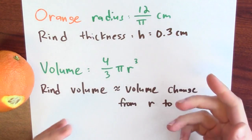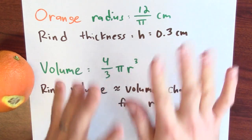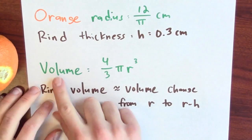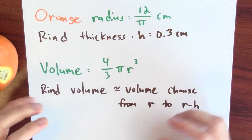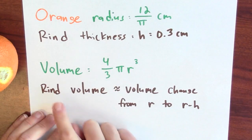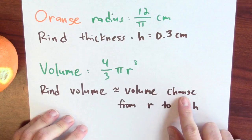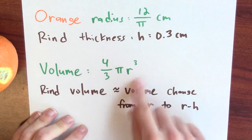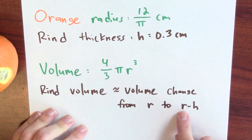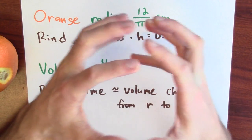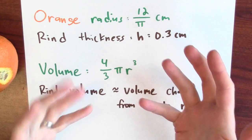Now, how does knowing the rind thickness help me calculate or at least approximate the volume of the rind in this whole orange? Well, I know the volume of a sphere, which is what I'm modeling the orange to be, is 4/3 π r³. And the rind volume is at least approximately how much the volume changes when I take this formula and replace r with r minus h. When I take that sphere and make it just a little bit smaller, that change in volume is the volume of the rind.